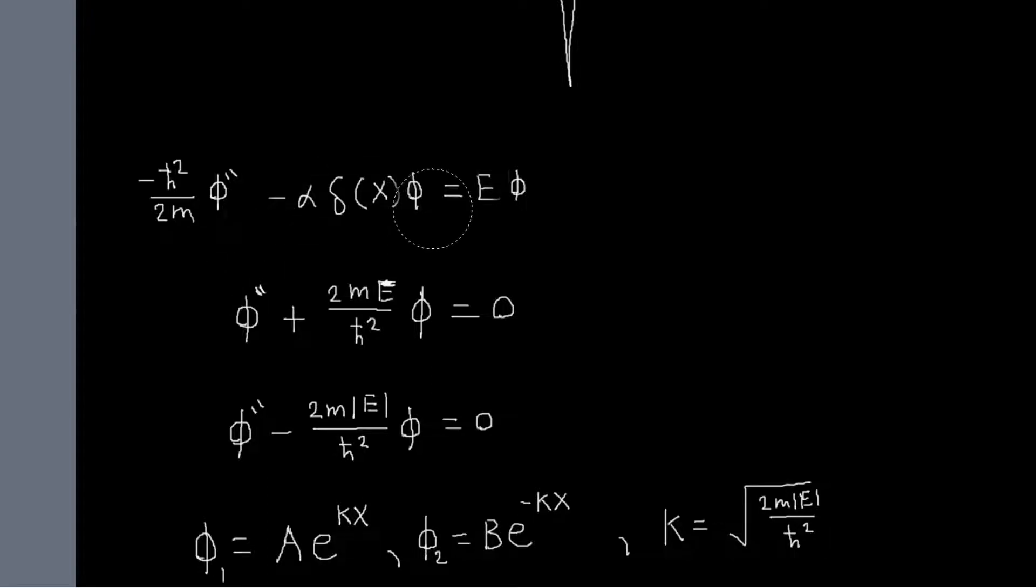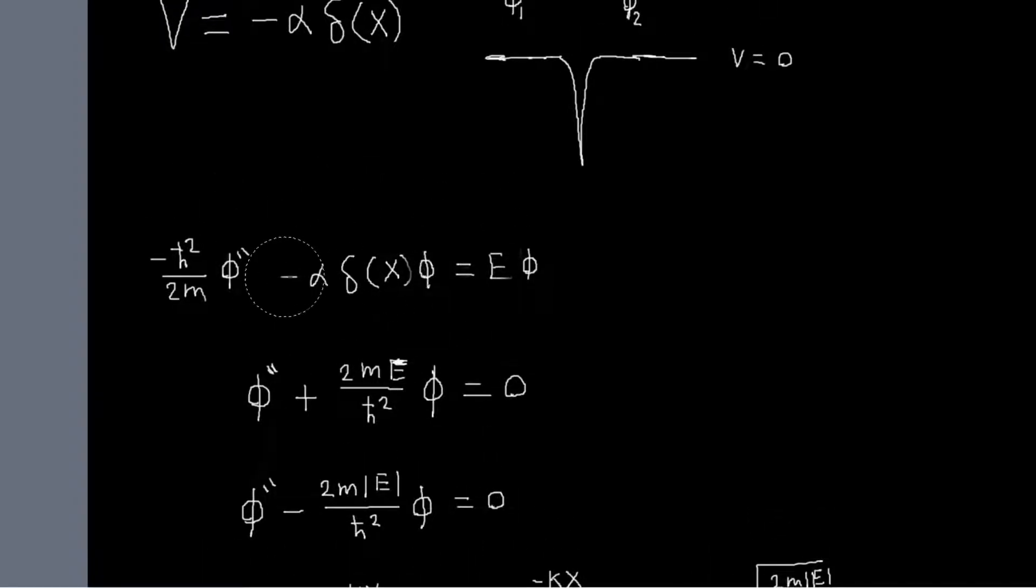And as it turns out, the way that we can derive a boundary condition is by taking this equation and integrating across our delta well. And we're going to be making use of the property of the Dirac delta that the integral of a function times delta of x minus a is just equal to the function evaluated at a. So it just picks out the value. So in this case, if we integrate over this delta function, we'll just get phi evaluated at zero.